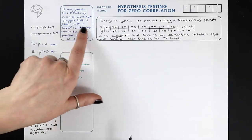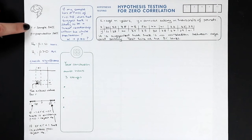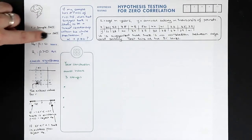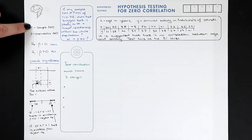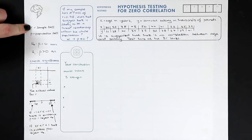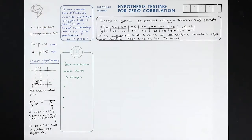There's a difference between r, which is my sample PMCC, and rho, which is the population PMCC. I can't do a census or test everything, so I've got a sample — but does that sample allow me to conclude that there is a linear relationship in the whole population? That's what this test is for.